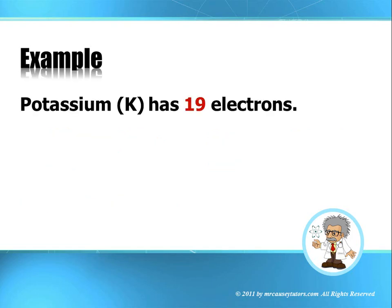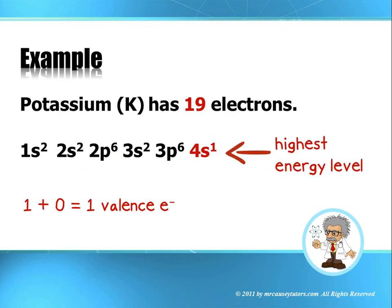Another example. How about potassium? It has 19 electrons. But if you find potassium on your periodic table, you'll notice that there is only one electron in the highest energy level. And it's a 4s1. So 1 plus 0. There are no P's. And we have one valence electron.